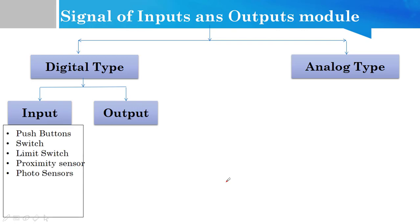As you can see, there are inputs: the push button, the switch, the limit switch, the proximity sensor, the photosensor - the inputs which give 0 and 1 input.